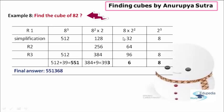Now moving to the third part — here what I have done is I have multiplied the digit in the tens place with the square of the digit in the ones place. In our example, we have 8 in the tens place and 2 in the ones place. Therefore, 8 × 2² = 8 × 4 = 32. The product I have written in the next row called simplification.